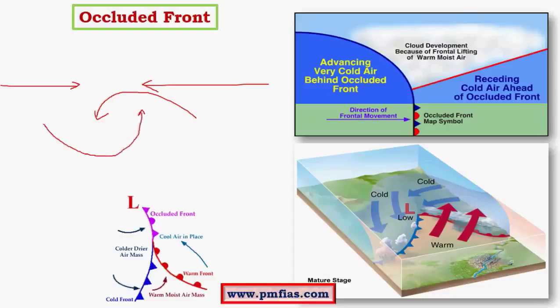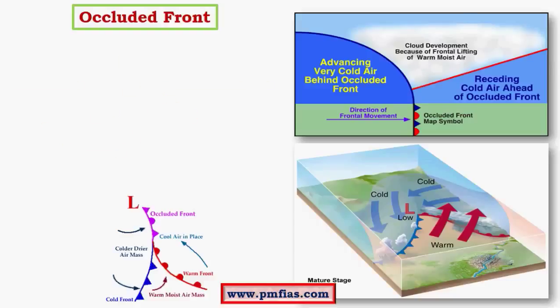Convergence is associated with low pressure at the center, whereas there is upliftment of air, and this upliftment is associated with divergence in the upper layers of the atmosphere. For now, remember that the occluded front is the convergence of two air masses.